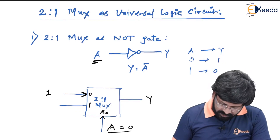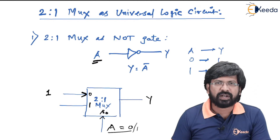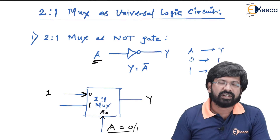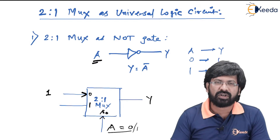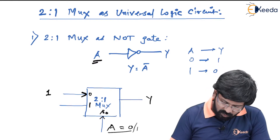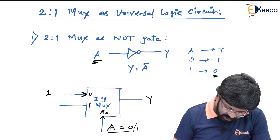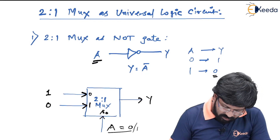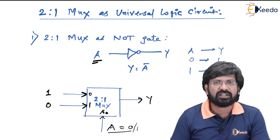Similarly, when A is equal to 1, S0 becomes 1. When S0 is equal to 1, Y gets connected to I1. When A is equal to 1, the output we want is 0. Therefore, I1 is connected to logic 0. This is how the circuit behaves as if it is a NOT gate even though internally it is a 2-to-1 multiplexer.